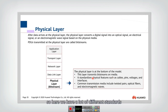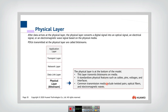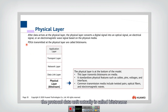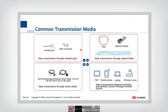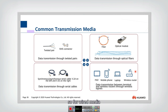We have a lot of different standards to give us the corresponding physical layer techniques. In the physical layer, the protocol data unit is called bitstreams. For the physical layer, we have two types of media to transmit the packet: one is called wired media, and the other one is wireless media.